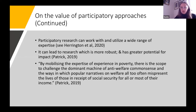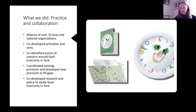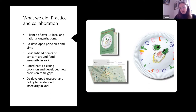I noticed Adrian Lovett is here as an audience member — he was a key person in this alliance and deserves a lot of credit. In about 2018, Adrian initially applied for a small pot of money from an organisation called Food Power, who were supporting the development of local alliances throughout the country. I collaborated with Adrian and together we developed this alliance, because there was a recognition in York that lots of organisations were working on food poverty but there wasn't much collaboration between them, which limited the impact they could have as a whole.